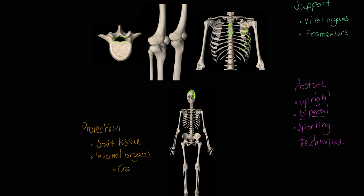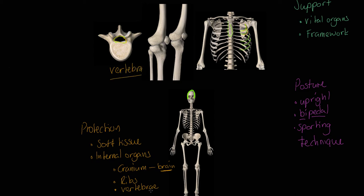The cranium protects the brain, but note that a strike to the head in boxing, MMA, rugby, or a fall in hockey means the cranium can also damage the brain — the brain can rattle and hit the inside of the cranium, which is literally what we call concussion. We also have the ribs and sternum protecting the chest cavity, and the vertebrae protecting the spinal cord. Note: vertebra is singular, vertebrae is plural.